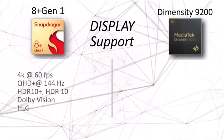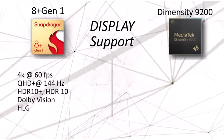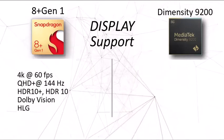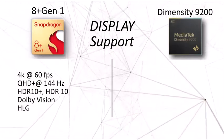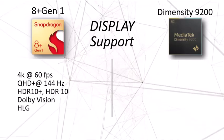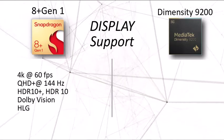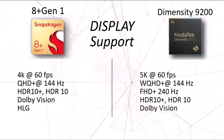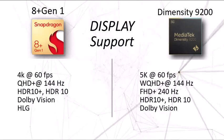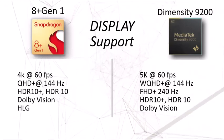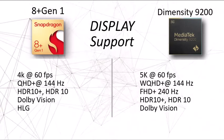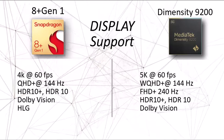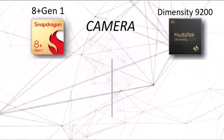For maximum display support, the MediaTek again performs better. The Snapdragon supports up to 4K at 60fps, but the MediaTek Dimensity 9200 can go up to 5K at 60fps. You can also run WQHD+ resolution at 144Hz, which is impressive.